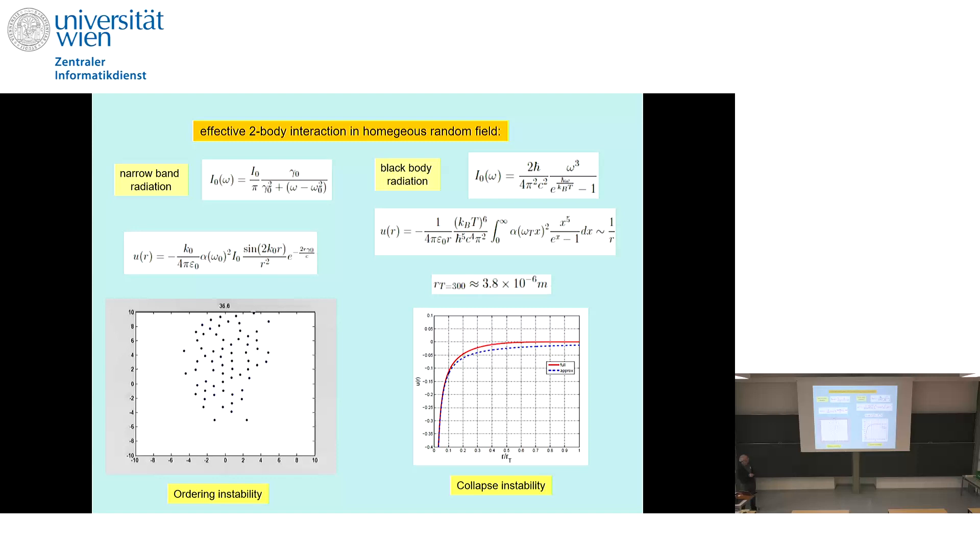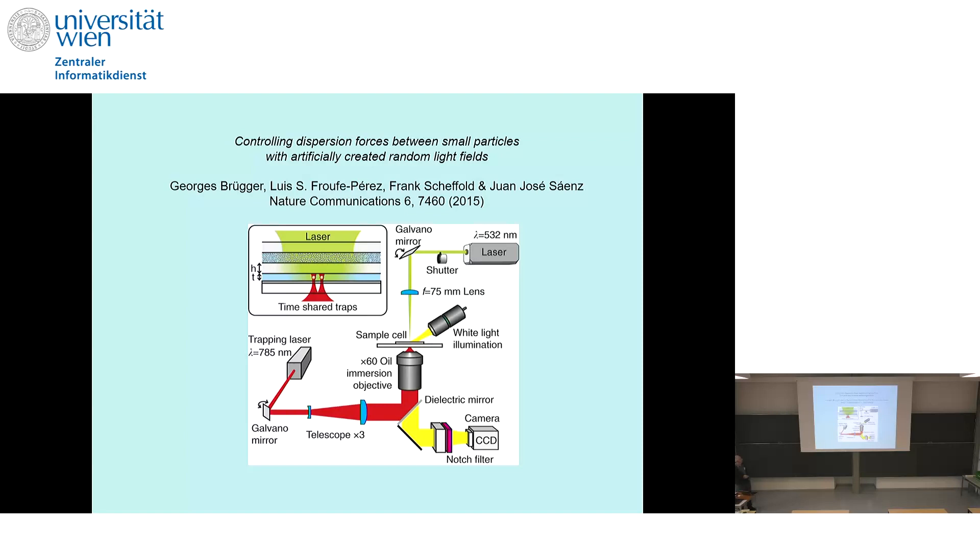If we now replace it by the full black-body radiation, there is no extra minimum. There is only attraction. All the particles within a certain radius, determined by the temperature, will be sucked into one field. We have a collapse instability. We heard a bit by Lewis about an experiment measuring a certain version of this force, showing that this is also something real.